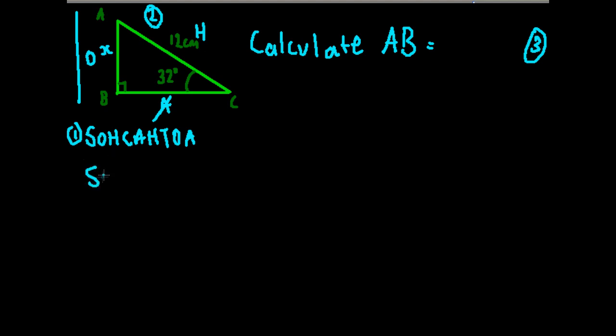So we can write this in. Sine 32 degrees equals the opposite, which is X, over the hypotenuse, which is 12. And simply, we rearrange: X equals sine 32 degrees times by 12 centimeters.